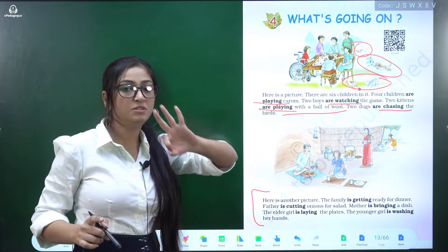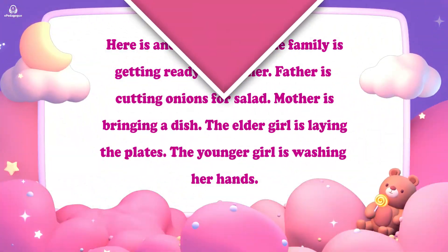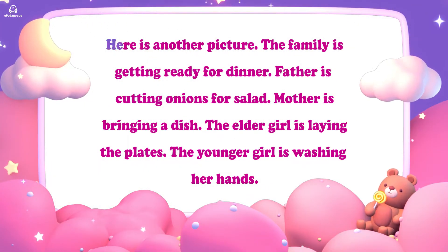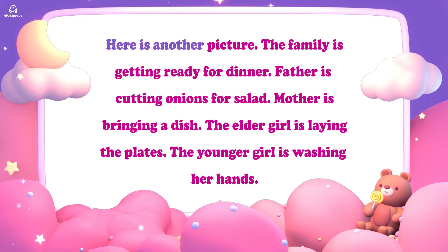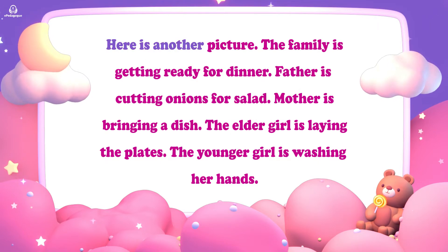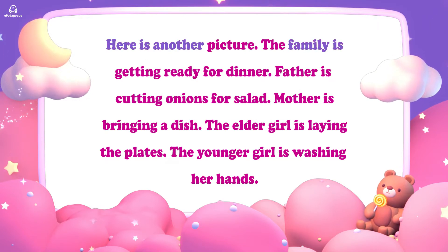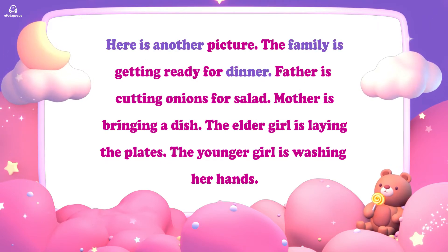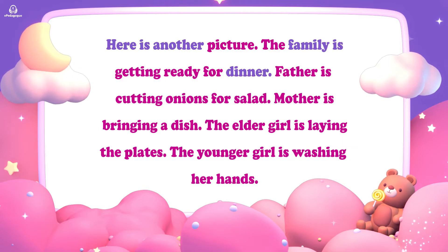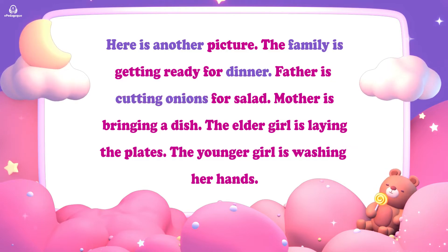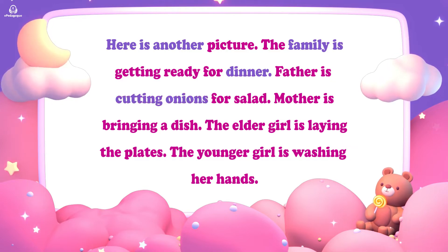In the first paragraph we also learned about three actions. Now we will learn more. Here is another picture. The family is getting ready for dinner. Father is cutting onions for salad.